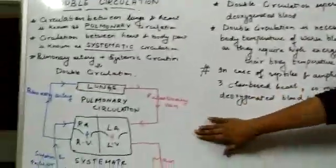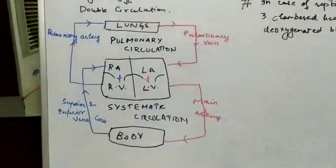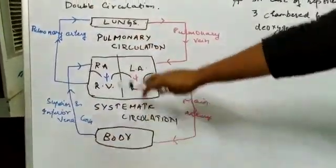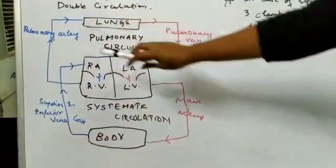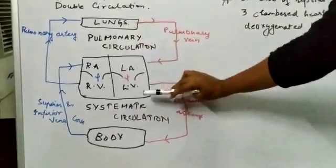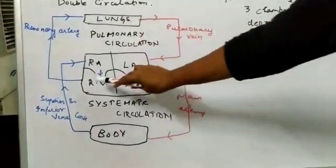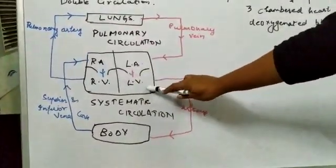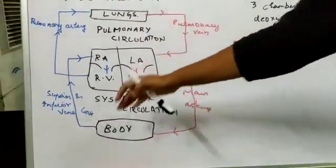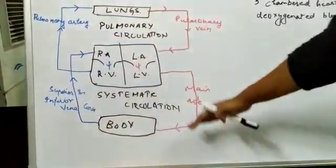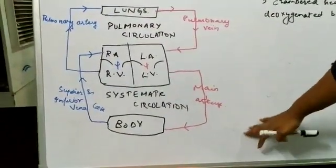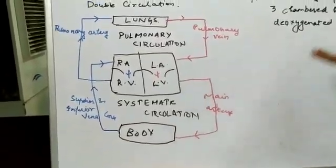Usi diagram ko continue karenge. Right side mein pura deoxygenated blood hota hai, aur left side mein pura oxygenated blood hota hai. So right side deoxygenated blood, left side oxygenated blood. Deoxygenated blood alag rehta hai aur oxygenated blood alag rehta hai. There is never a mixing of oxygenated and deoxygenated blood.